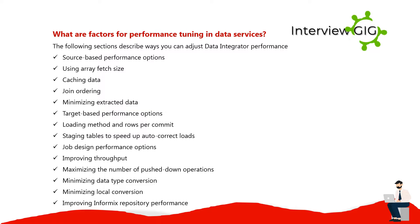What are the factors for performance tuning in Data Services? The following sections describe ways to adjust data for greater performance: source-based performance options using array fetch size, caching data, join ordering, minimizing extracted data, target-based performance options including loading method and rows per commit, staging tables to speed up auto-correct loads, job design performance options improving throughput, maximizing pushed-down operations, minimizing data type conversion, minimizing local conversion, and improving Informix repository performance.